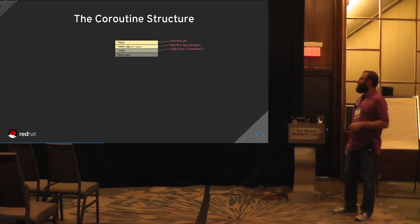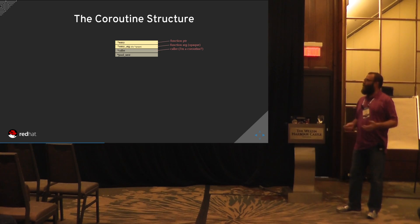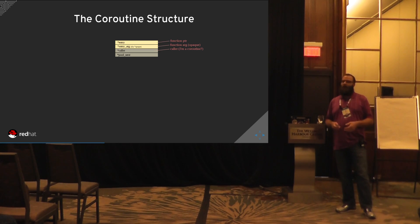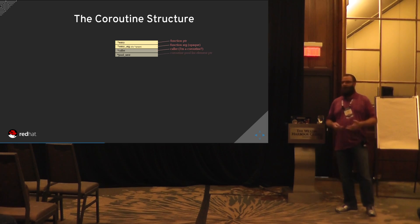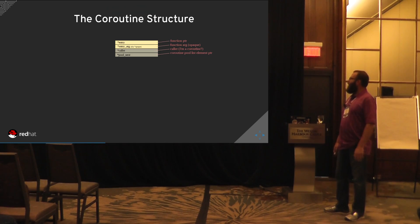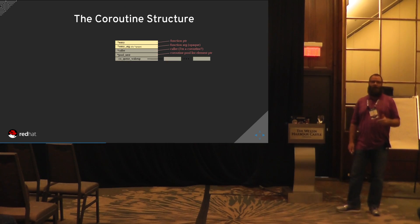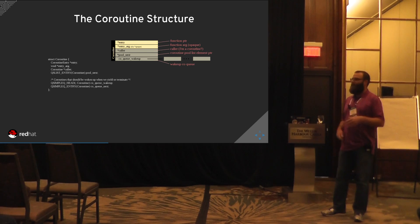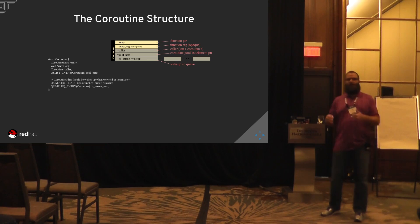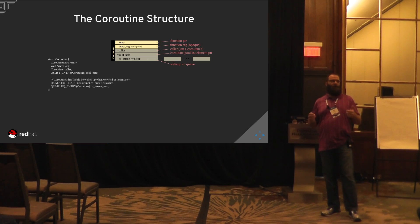We also have coroutine pools — a global free list of coroutines. When coroutines exit and the free list pool is enabled, we don't deallocate and destroy the coroutine; we return it to the free list pool. This reduces overhead of allocating coroutine memory. Each coroutine also has a queue of other coroutines to be executed — the wake-up queue. When we yield or terminate a coroutine, it goes through all coroutines in the wake-up queue and enters each one before returning control to the original caller.